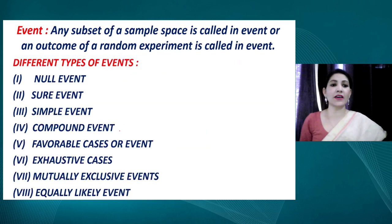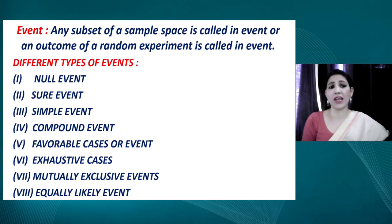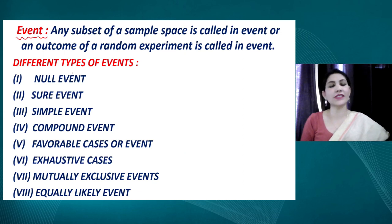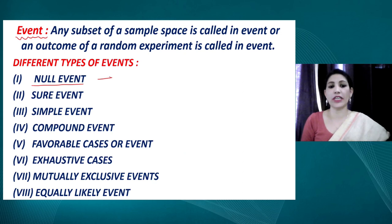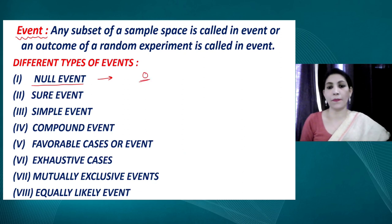Now let's discuss events. We have discussed various types of events — what we perform in a random experiment is known as an event, such as getting an even number or an odd number when rolling a die. We also discussed null events, where no outcome is possible.